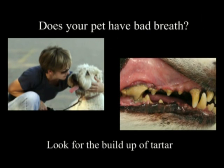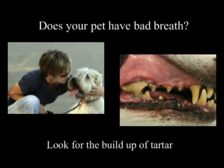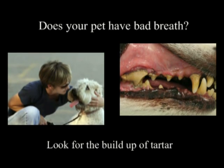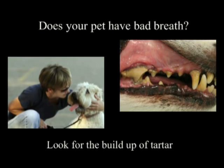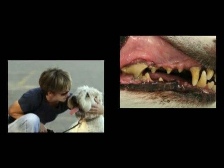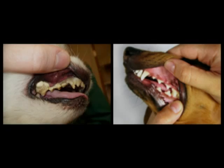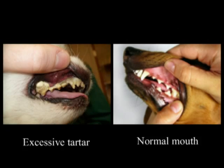Does your pet have bad breath? Lift the gums and take a look for a buildup of tartar. This is exactly where the odor starts from. On the left is an example of a pet with excessive tartar buildup. Note the plaque accumulation — it's green in color.